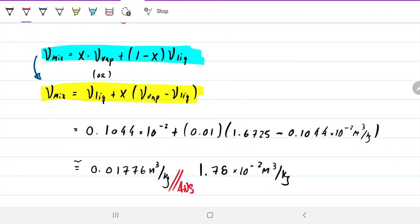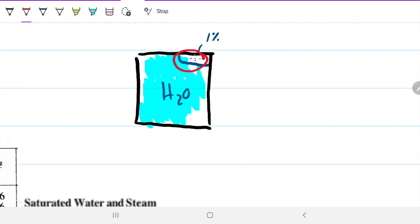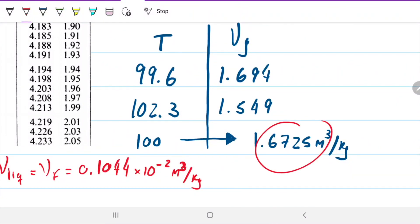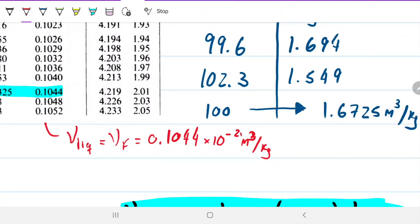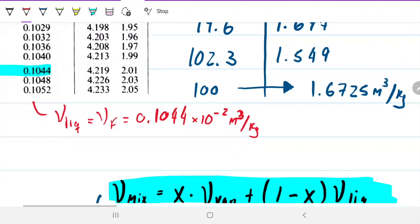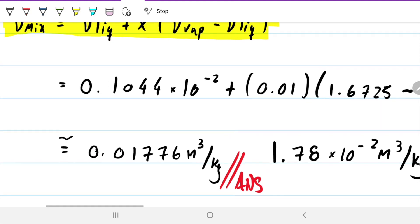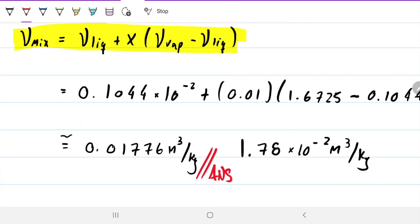One thing to note whenever you're doing this is that the quality we found is 1%. There's 1% of vapor versus 99% of liquid. So the specific volume should be way closer to the liquid one than the vapor one. And indeed, check out, the vapor one is about 1.6, and the liquid one is about 0.001044. And what we get is 0.0177. So we still get a little boost from the vapor on the volume, but the actual value is way closer to our liquid specific volume than our vapor specific volume.